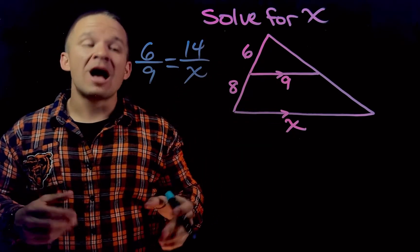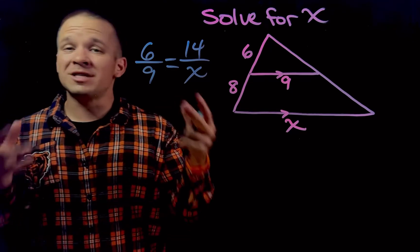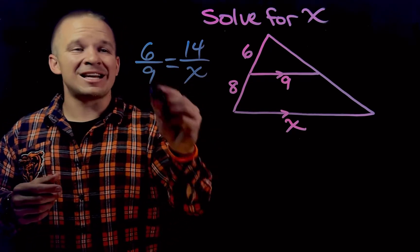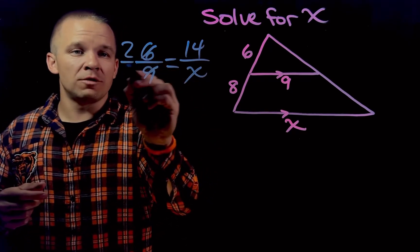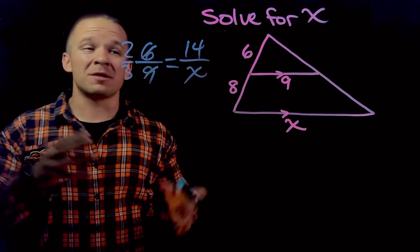And now I can cross multiply and solve. But if you'd like, we can actually simplify first. I can take the 6 and that 9, reduce it down to 2 thirds. Now I'm dealing with some smaller numbers that are going to be easier to work with.